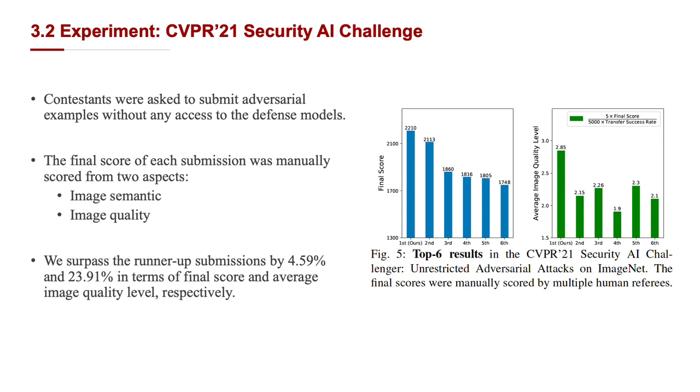In the CVPR 21 Secure AI Challenge, contestants were asked to submit adversarial examples without any access to the defense models. The final score of each submission was manually scored from two aspects: the image thematic and image quality. We apply our method GA-DTMI to the competition where our entry ranked first place out of 1,559 teams.